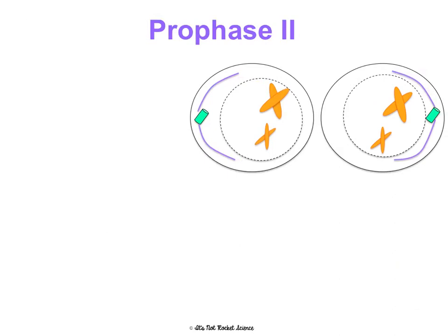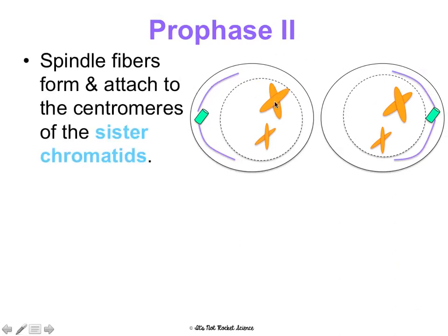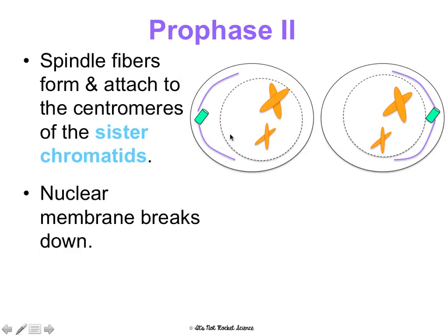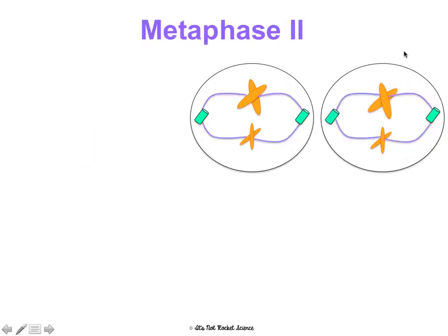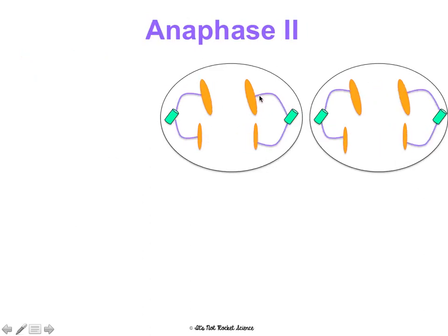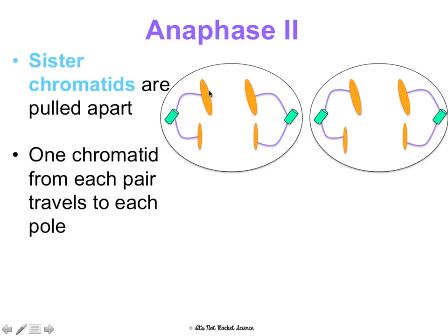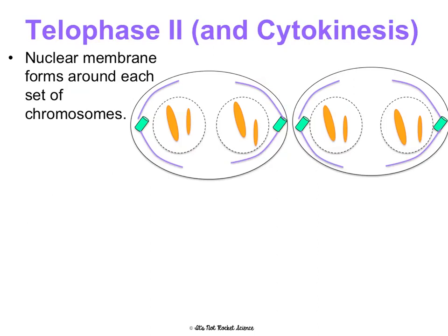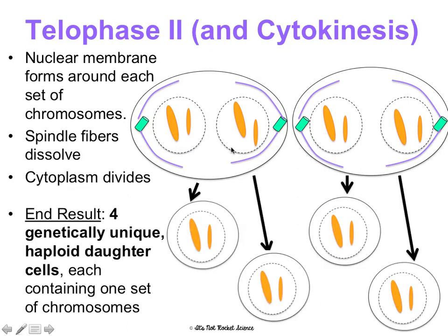So we have to do PMAT again. In prophase II, spindle fibers form and attach to the centromeres of the sister chromatids, and nuclear membranes break down — notice this is happening in two cells at once. In metaphase II, the sister chromatids line up single file because there are no longer pairs. In anaphase II, the sister chromatids get separated — one chromatid from each pair goes to each side of the cell. In telophase II and cytokinesis, the nuclear membranes form around the sets of chromosomes, spindle fibers dissolve, and the cytoplasm divides. The end result is four completely genetically unique haploid daughter cells. We started with four chromosomes — that was the diploid number — and we're ending with two, which is half the original number, each containing one set of chromosomes.